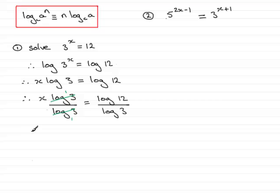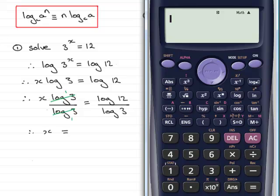So therefore, x is going to equal the result of dividing log 12 by log 3. So what is log 12 divided by log 3? Well, we can do it on any scientific calculator. We've got the log button here, so we can just type in the log of 12, close the bracket, and divide it by the log of 3.